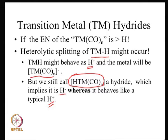This creates confusion because we call all metal-hydrogen compounds 'metal hydrides,' implying H⁻, whereas in complexes like H-TM(CO)ₙ, the hydrogen is behaving as a typical proton. The chemistry implies that hydrogen is H⁺ in the complex, whereas in the nomenclature we refer to it as a hydride. So this is something that can lead to confusion.